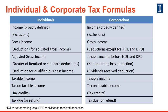In contrast to individuals, corporations do not compute AGI, itemize deductions, receive a standard deduction, or consider the deduction for qualified business income. Instead, as legal entities separate from their owners, corporations deduct ordinary and necessary business expenses under Code Section 162. If qualified, they also receive deductions for net operating losses, or NOLs, and dividends received from other corporations.